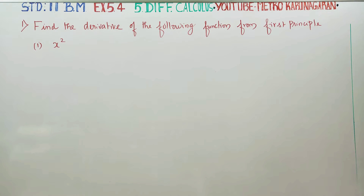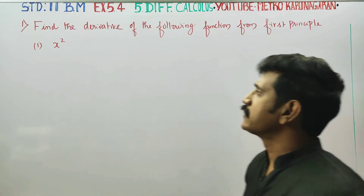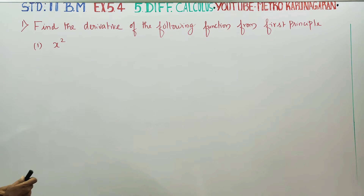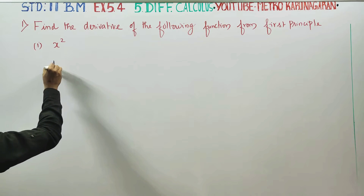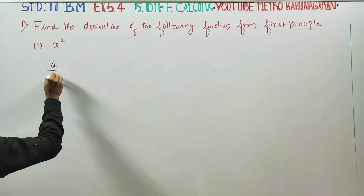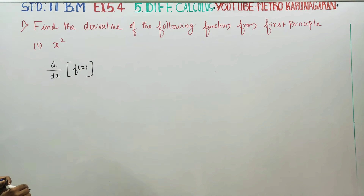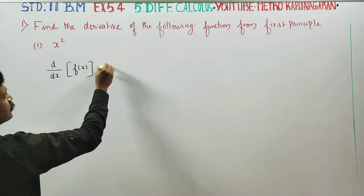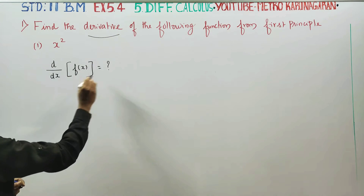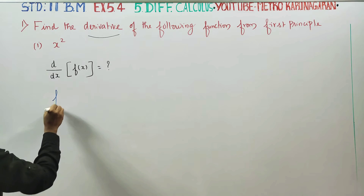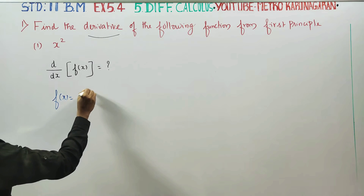Dear students, find the derivative of the function x squared. If you differentiate using first principles, we need d by dx of a function. The question is: find the derivative of the function. If you have a function f of x equal to x squared.